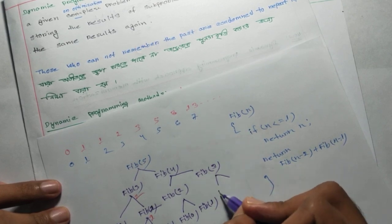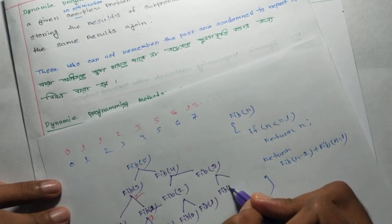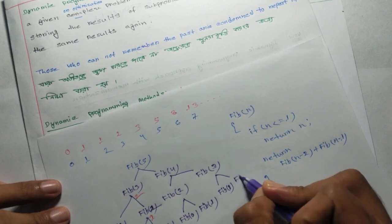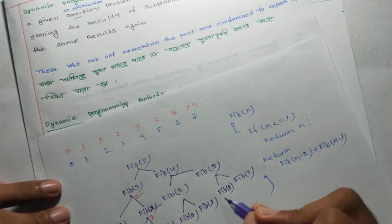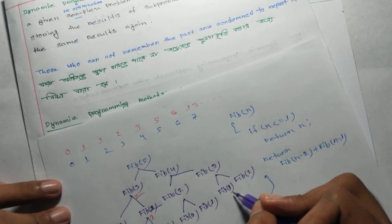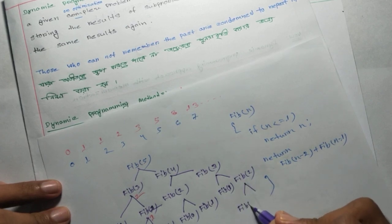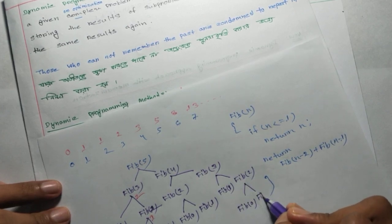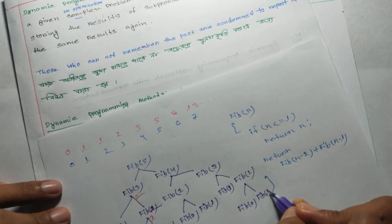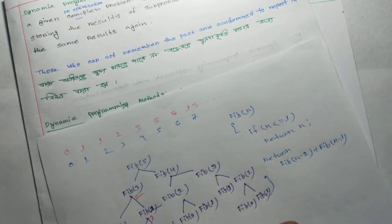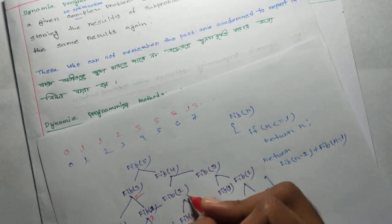Fib(3) calls fib(1) and fib(2). Fib(1) returns 1, fib(2) calls fib(0) and fib(1). Fib(0) returns 0, fib(1) returns 1. So fib(2) is 1.